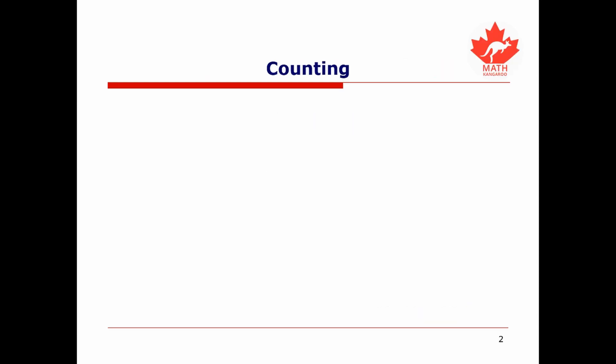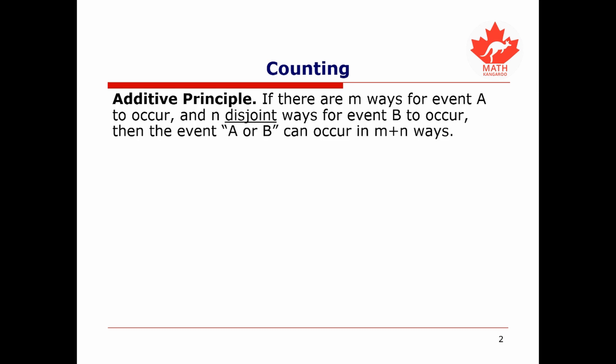One of the most important concepts to be familiar with when considering counting problems is the so-called additive principle. This principle states that if there are m ways for an event A to occur and n disjoint ways for an event B to occur, then the event A or B can occur in m plus n ways.